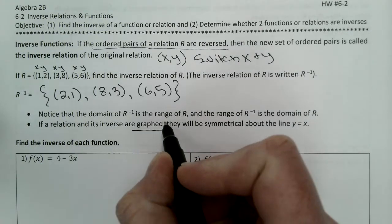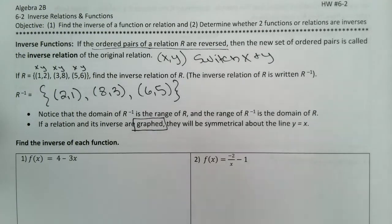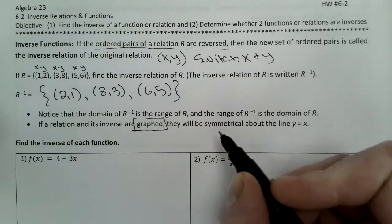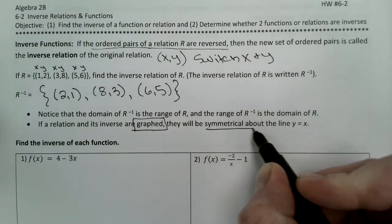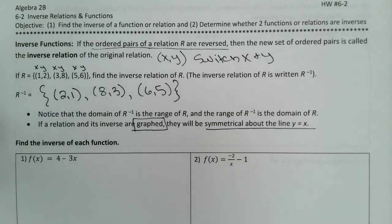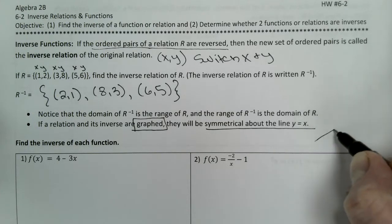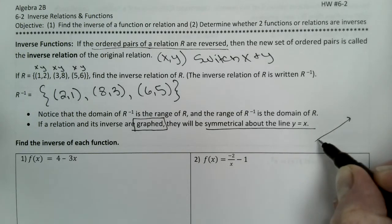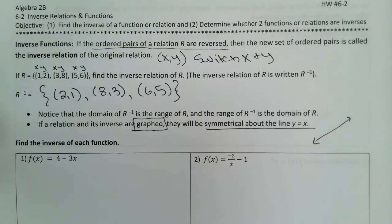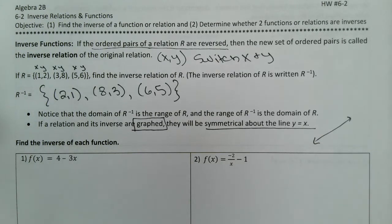If they are graphed, they are symmetrical about the line y equals x. The line y equals x is a diagonal line, and the inverse functions are symmetrical about that line.